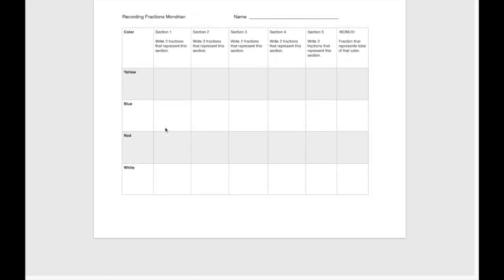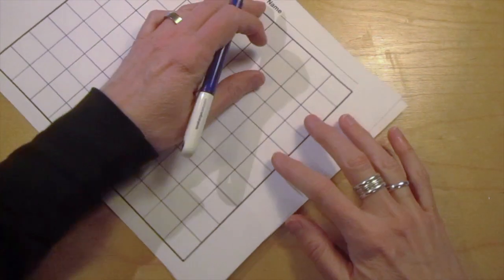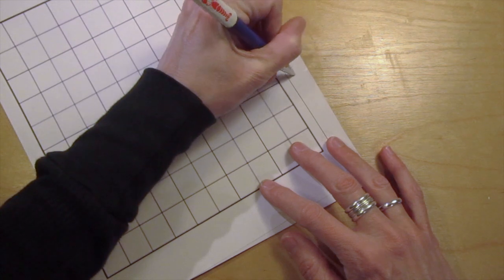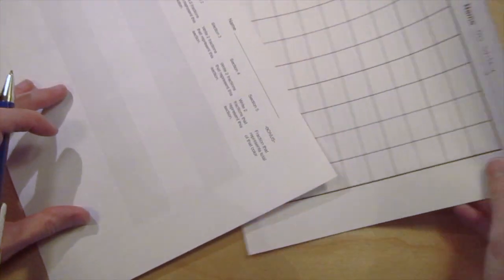To start this work of art, you will need two papers. One is the Mondrian Fractions Art Planning Sheet and one is called Recording Fractions Mondrian. Begin by writing your name on both of these papers. You will also need a red, yellow, and blue crayon.